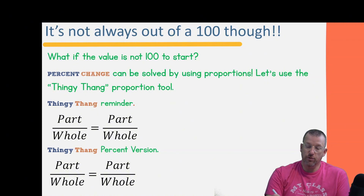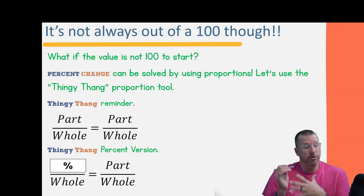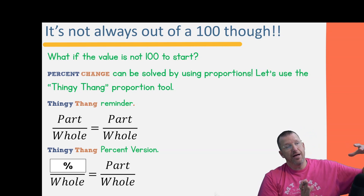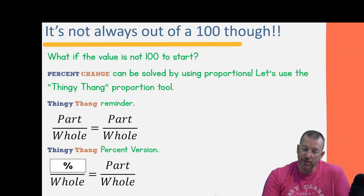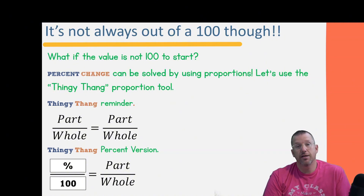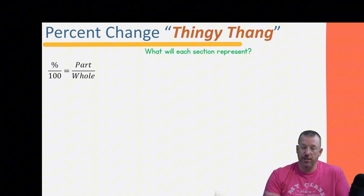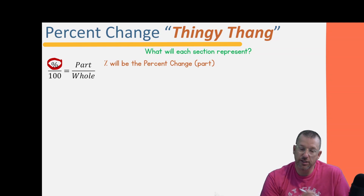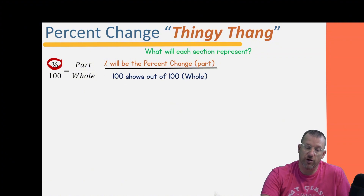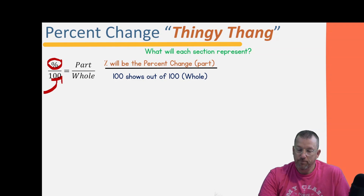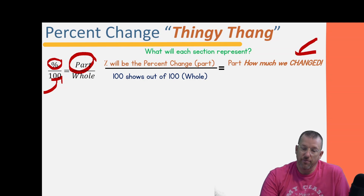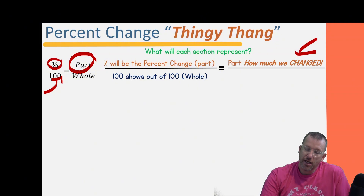The thingy thang is a way of comparing two ratios that are in proportion. In the percent version, we set up: percent over 100 equals part over whole. The percent is the part, and 100 is the whole — because 100 out of 100 is everything. The percent change goes on top, 100 on the bottom of one fraction; the amount of change goes on top, and the original value goes on the bottom of the other fraction.